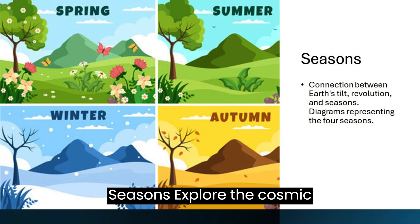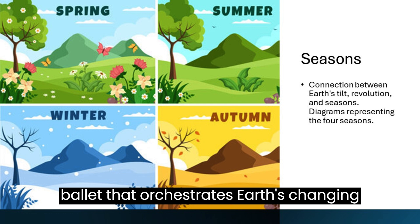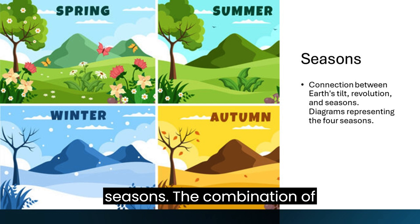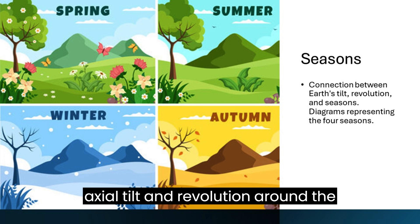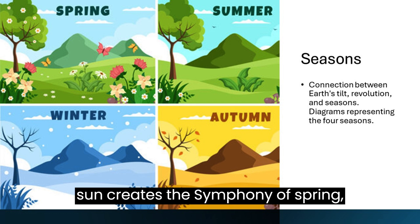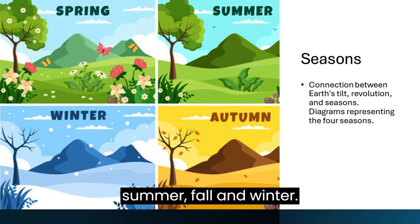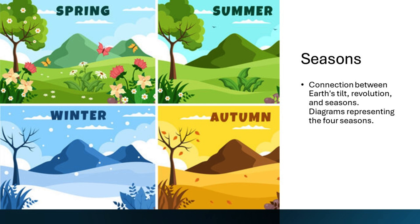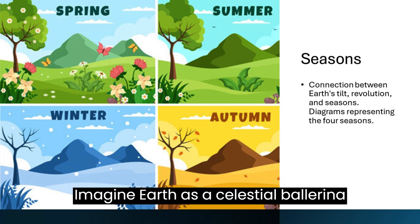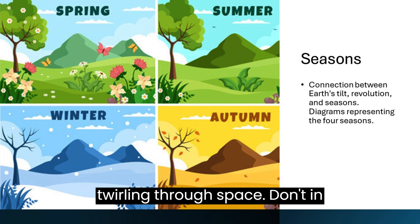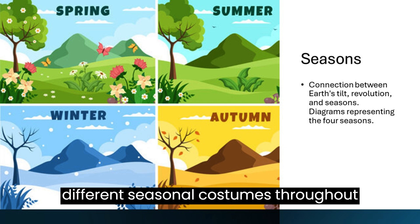Explore the cosmic ballet that orchestrates Earth's changing seasons. The combination of axial tilt and revolution around the sun creates the symphony of spring, summer, fall, and winter. Imagine Earth as a celestial ballerina twirling through space, donned in different seasonal costumes throughout the year.